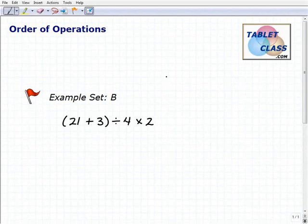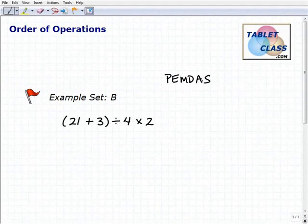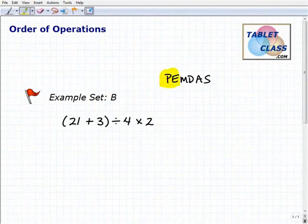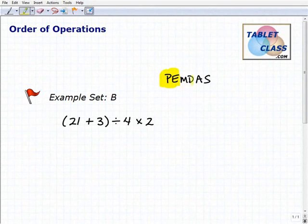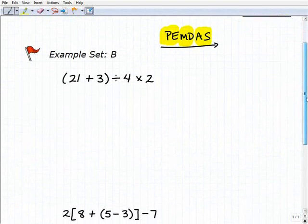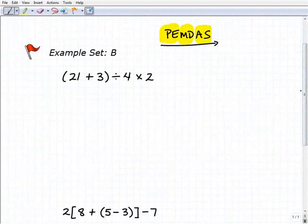Now recall from the lesson, the easy way to remember the order of operations is this saying here, PEMDAS, right? Where the P stands for parentheses or grouping symbols. That's what we're going to do first. And then we're going to do the E next, which is exponents or powers. And then we'll do multiplication, division, addition, subtraction. And we're going to do this from left to right. So with that in mind, let's go ahead and apply this procedure to these problems here.